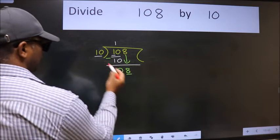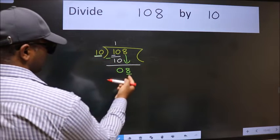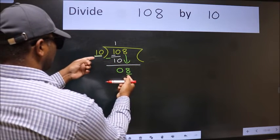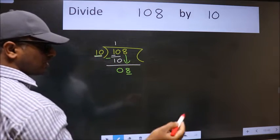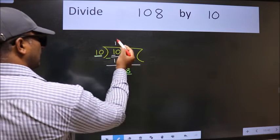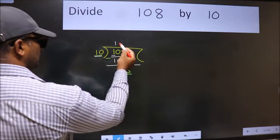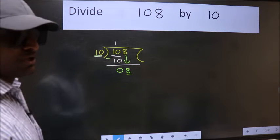Here we have 8 and here 10. 8 is smaller than 10. So what many do is they directly put dot, take 0, which is wrong.